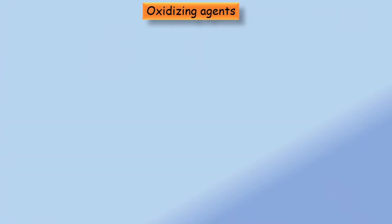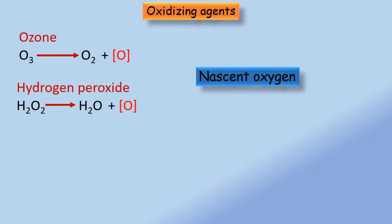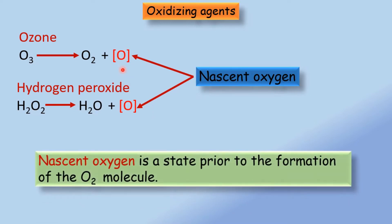A variety of oxidants are used to bring about oxidation. For example, ozone is also a chemical oxidant. Hydrogen peroxide is used as a mild oxidant. Nascent oxygen is generated by chemical oxidants and used for oxidation reactions. Nascent oxygen is the state prior to formation of the oxygen molecule — it is a reactive form of oxygen represented by the symbol [O] (O written in square brackets).